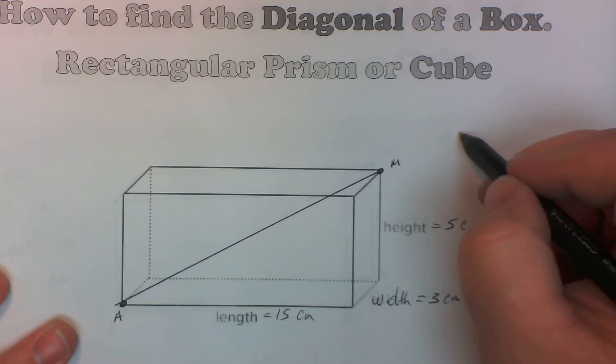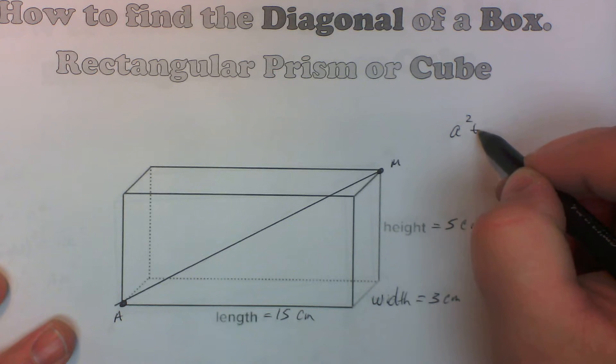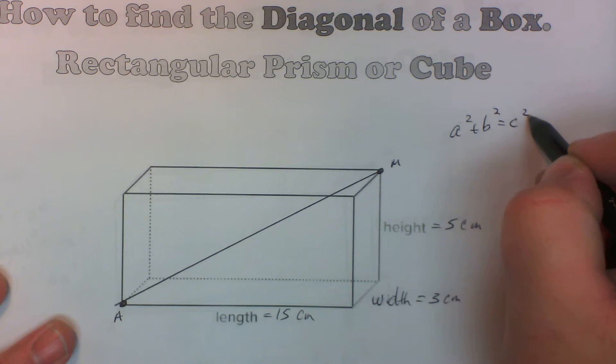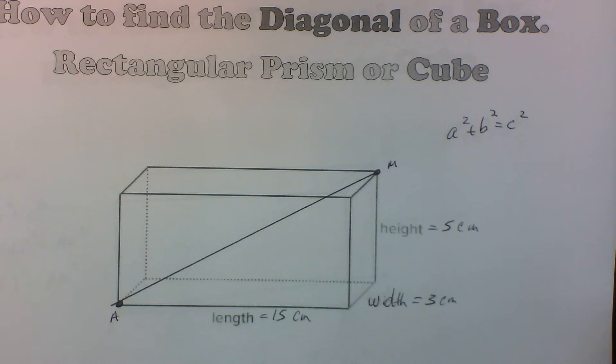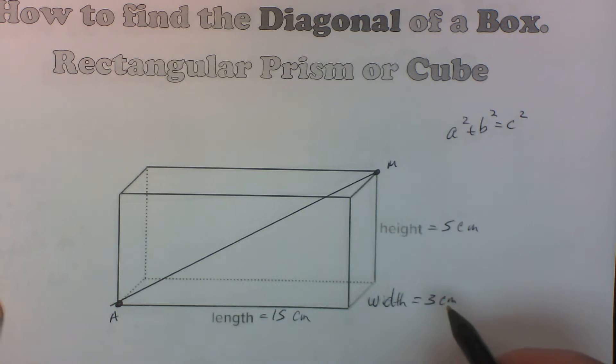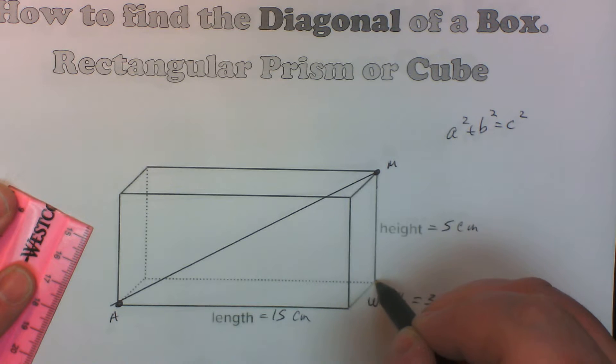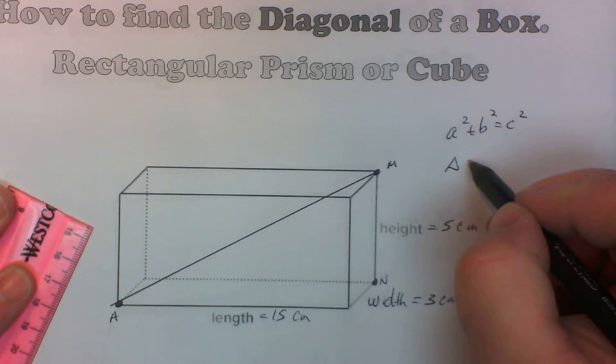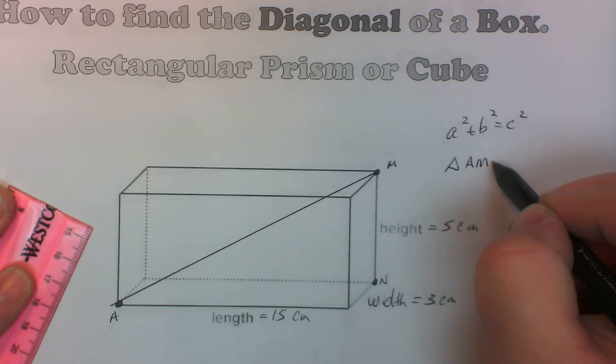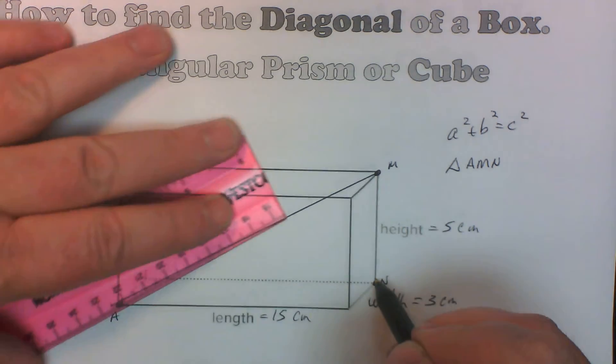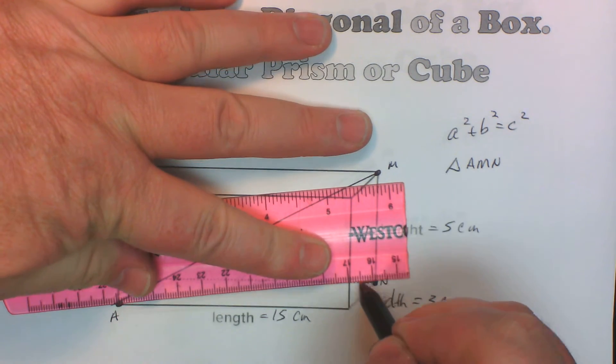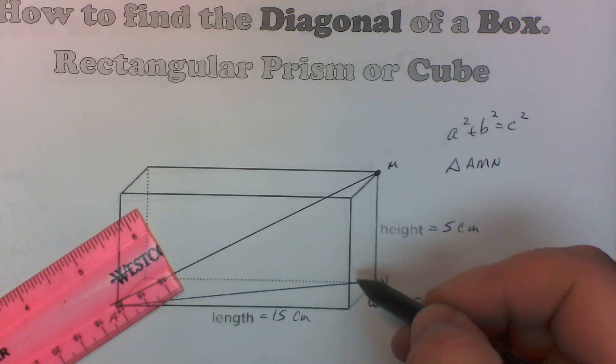Basically what you're going to end up doing is you're going to end up having to use the Pythagorean theorem twice. I'll break that down for you. So the triangle we're going to end up using is, let's say this is N. We're going to end up solving triangle A, M, and this triangle right here. This is the triangle we're going to end up having to figure out all the sides for.